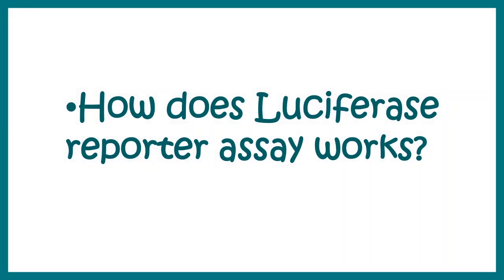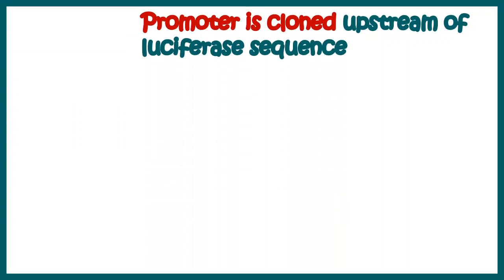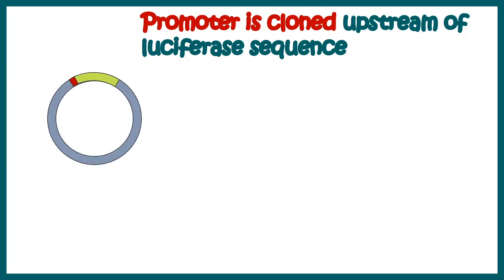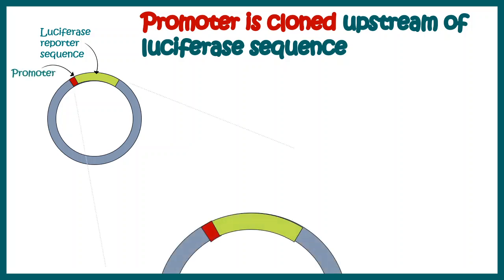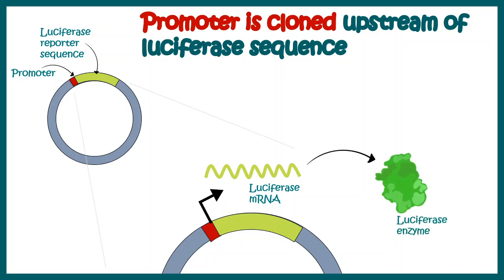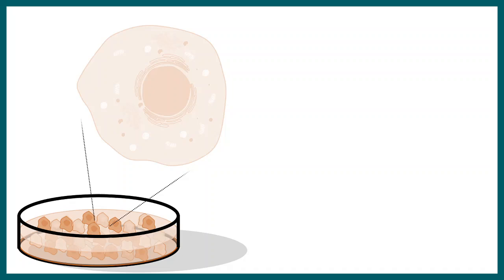So let's see how it works. First, we need to check whether a particular promoter is active or not. In order to do that, we have to clone a promoter upstream to a luciferase reporter sequence. You can see the luciferase reporter sequence in green and the promoter sequence in red. So if this particular promoter is active, then mRNA for luciferase would be produced and eventually translated into luciferase enzyme. When we add the substrate, this luciferase enzyme will show bioluminescence.